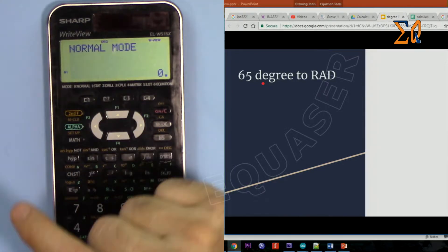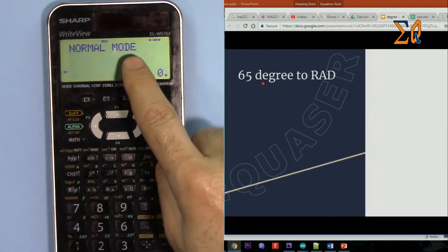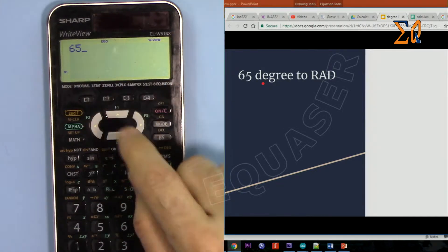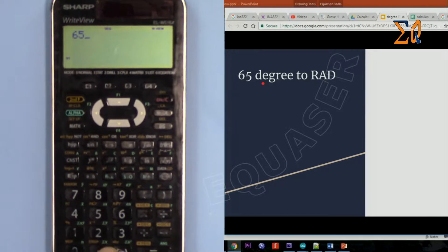Now we have DEG. So let's enter 65, that is in degree. So for the degree, radian, and gradient we press this decimal point with second function.